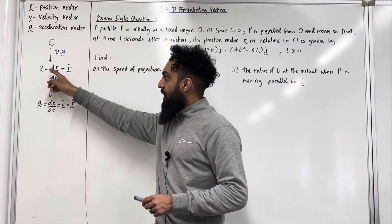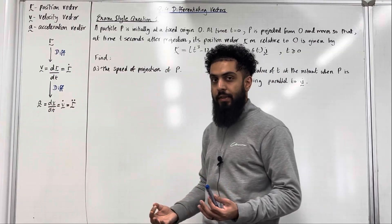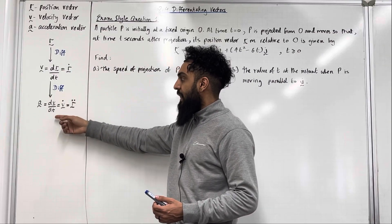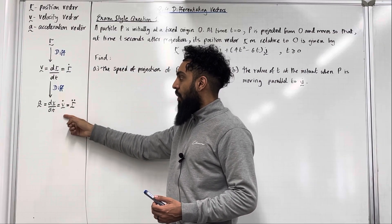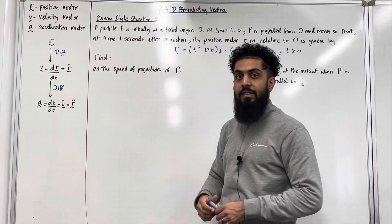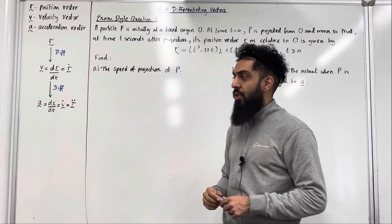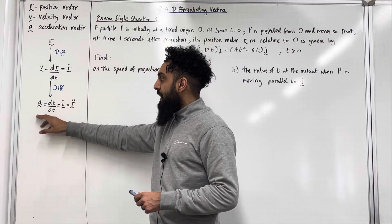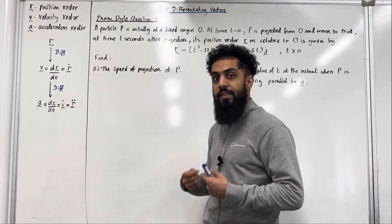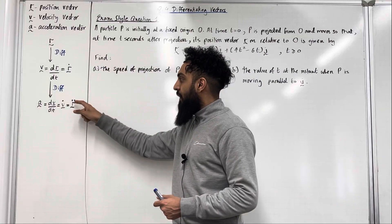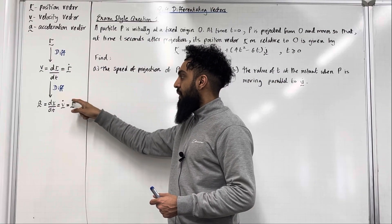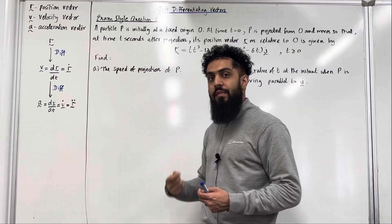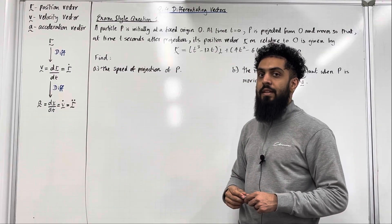If you differentiate the velocity vector you get the acceleration vector, so the acceleration vector is the derivative of the velocity vector. You can rewrite this as V squiggle with a dot, representing the derivative of the velocity vector with respect to time. Alternatively, to find the acceleration vector you can find the double derivative of the position vector — R squiggle with two dots on top — representing the double derivative of the position vector with respect to time.